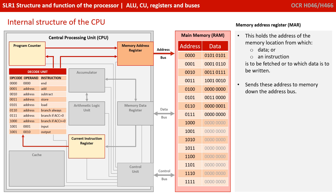The memory address register holds the address of the memory location from which data or an instruction is to be fetched, or to which data is to be written. It sends these addresses to memory down a bus called the address bus.